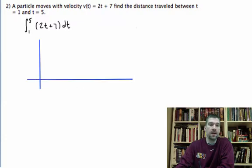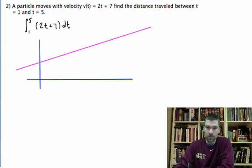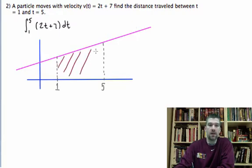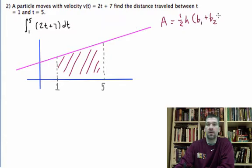So here's my lines, and my graph is 2t plus 7, so it's going to have some shape like this. We are starting at 1 and going to 5. The shape that you're looking at for area is a trapezoid.